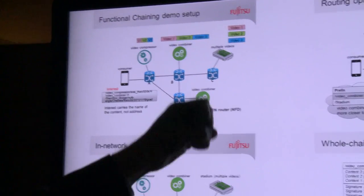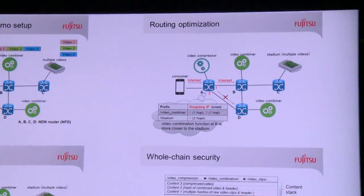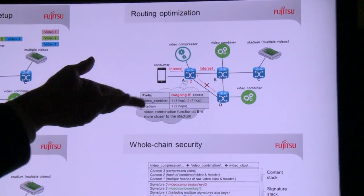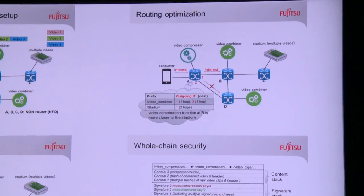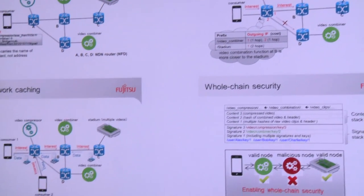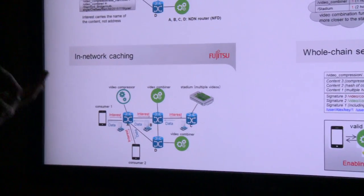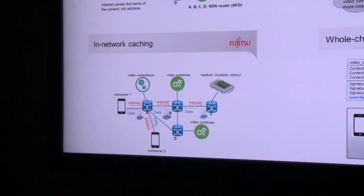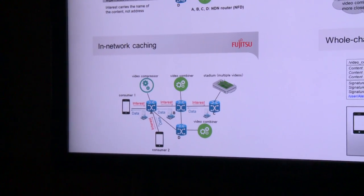This is the routing optimization — you can determine the optimal path, that is what that is illustrating. Same thing with the network caching, with multiple consumer requests coming in and the improvement that comes from that.